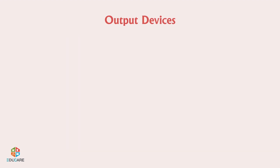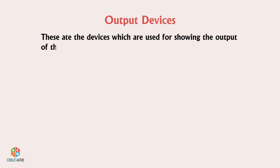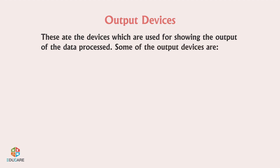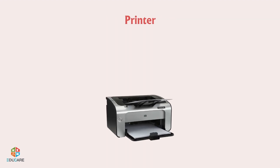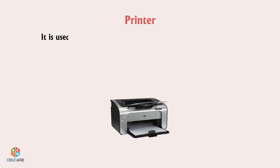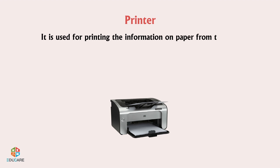Output devices are the devices which are used for showing the output of the data processed. One of the output devices is the Printer, which is used for printing the information on paper from the computer screen.